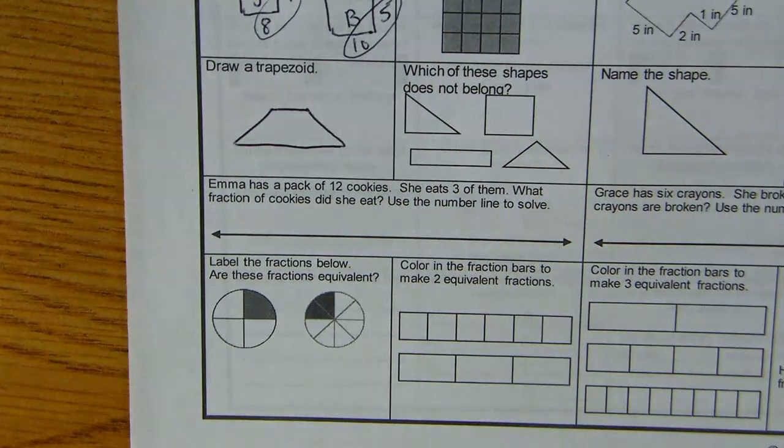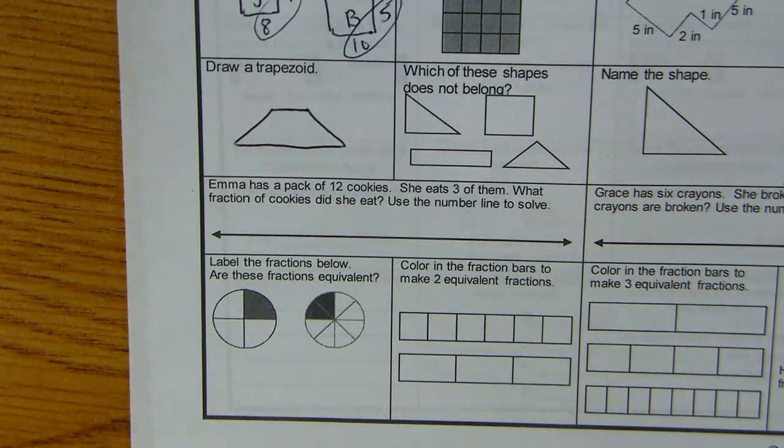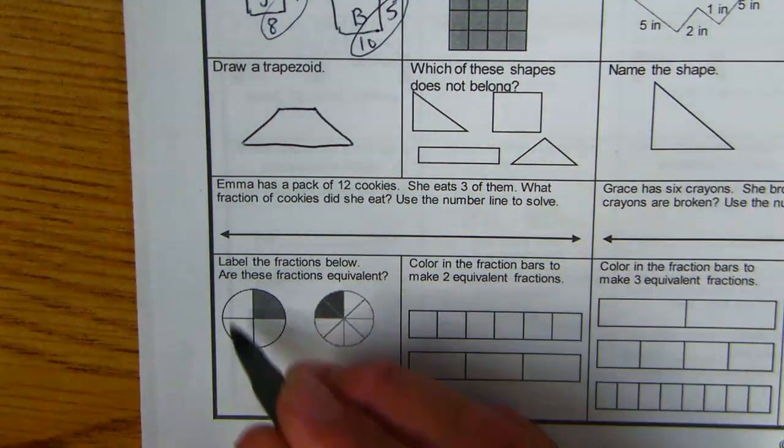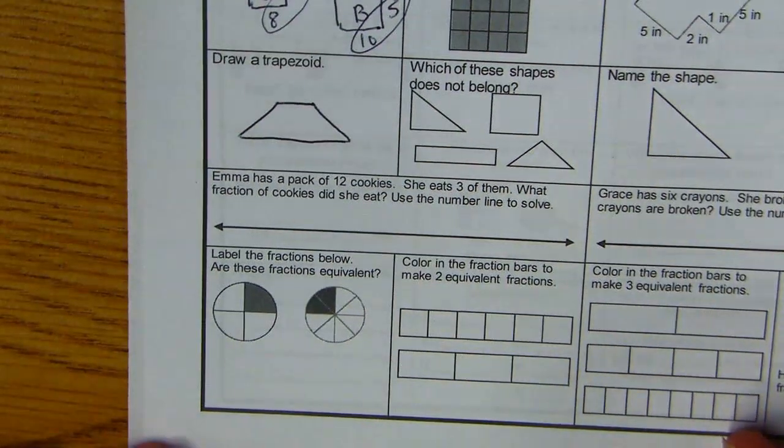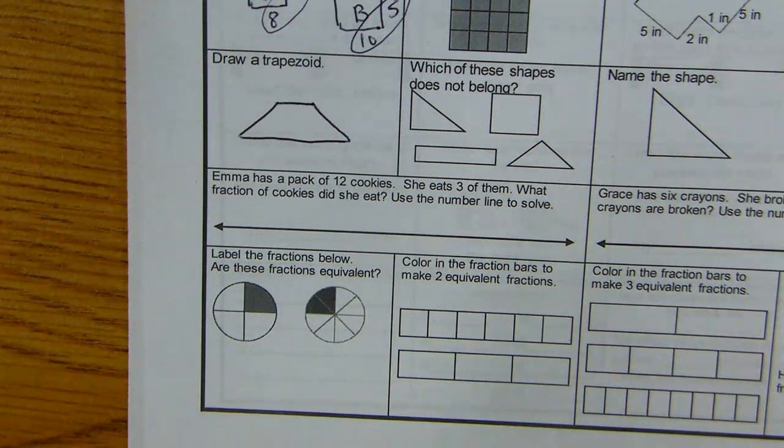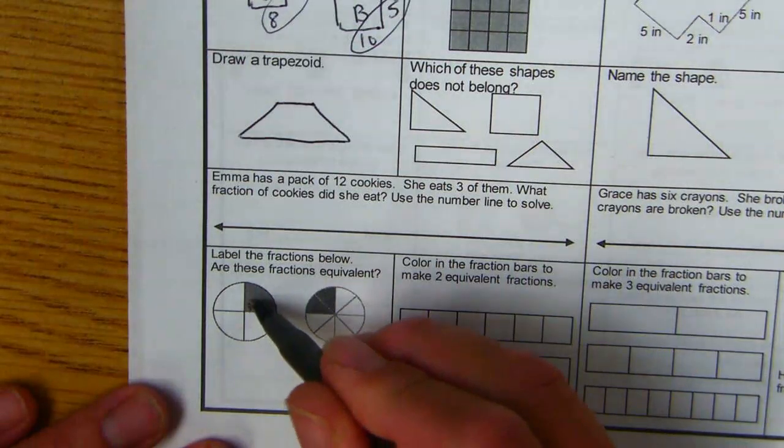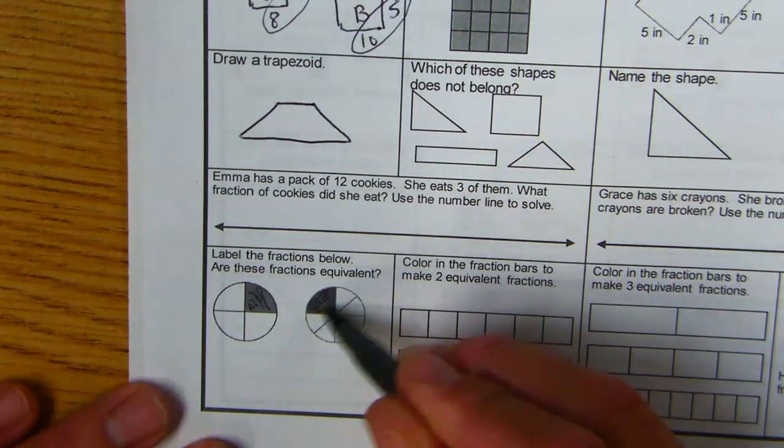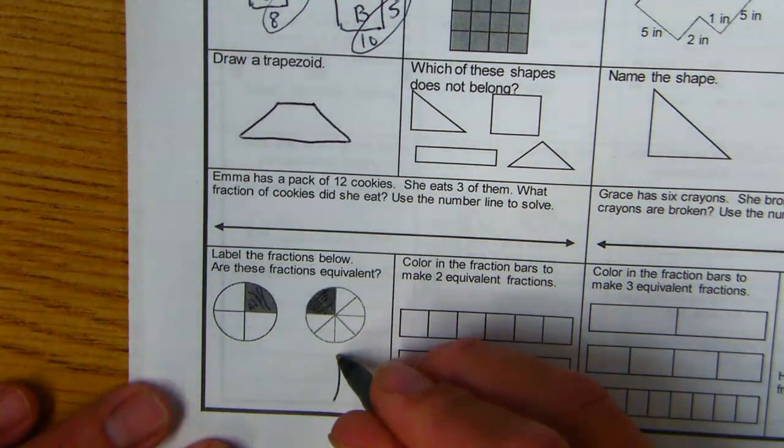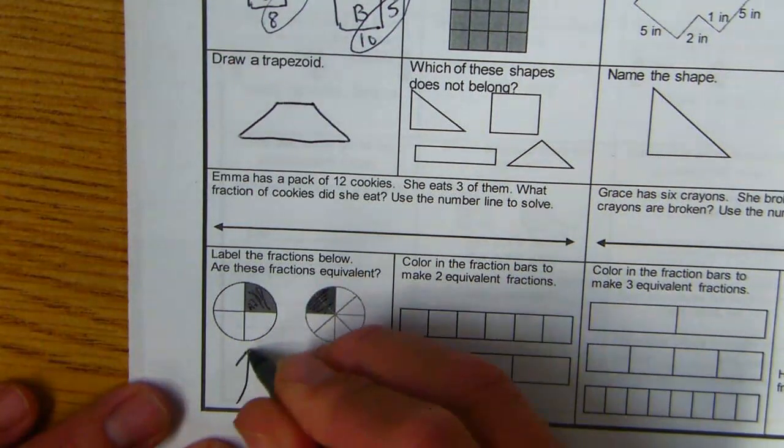Label the fractions below. Are these fractions equivalent? The key thing with equivalent fractions is, as long as it's the same size pizza, is it the same size pizza? Yes. So look at this shaded area. Is there any more pizza here than there is here?